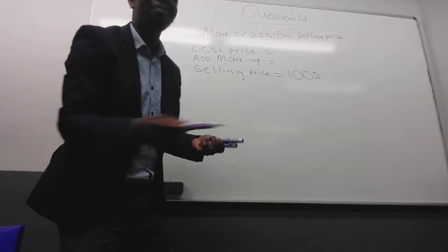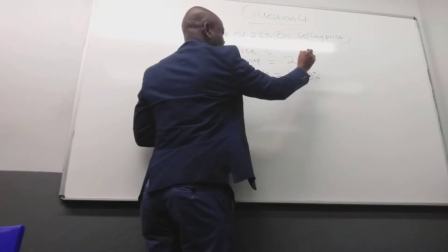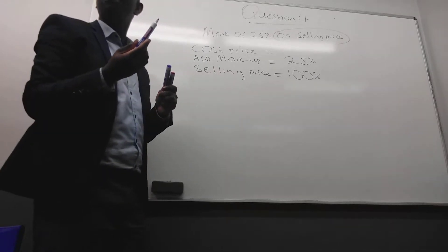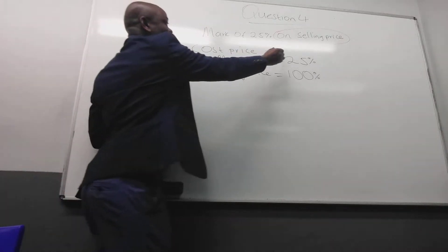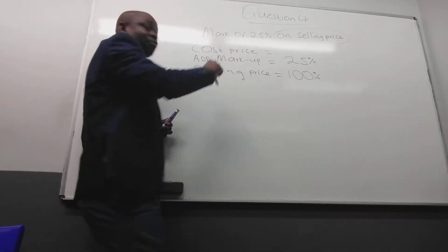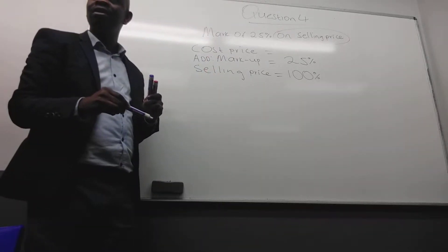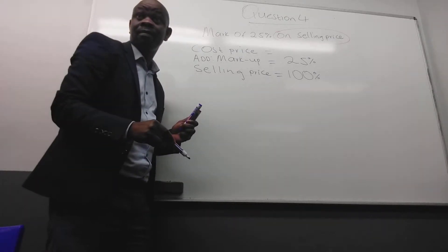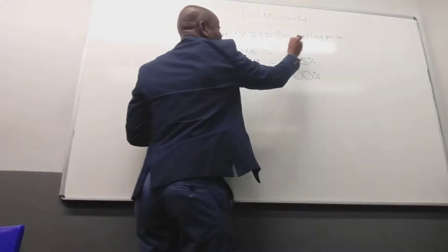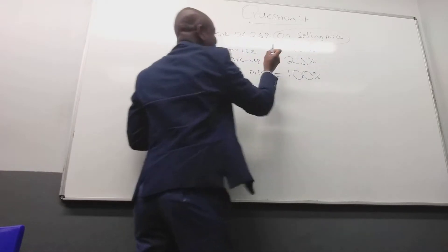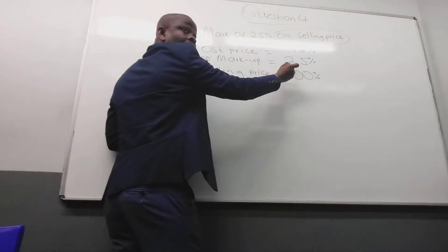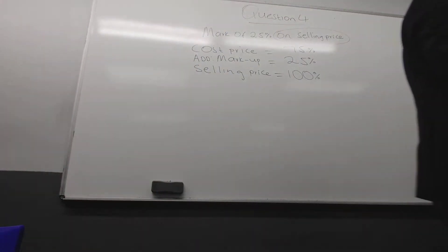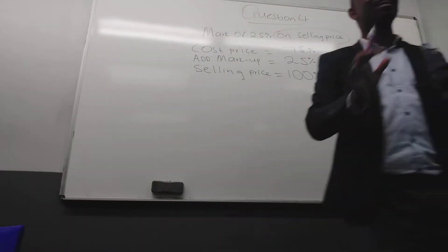And obviously they gave us the markup of how much? 25%. It's given. Don't come with your own markup. So now you must know cost price. But you need to satisfy the formula. So if you check the formula, what must I put there so that I can satisfy the formula? 75. Why? Because when I say 75 plus 25, I must get what? And now you are ready for action.